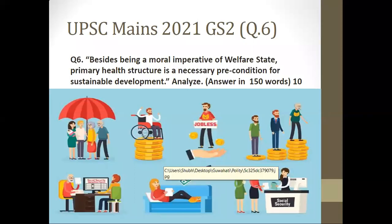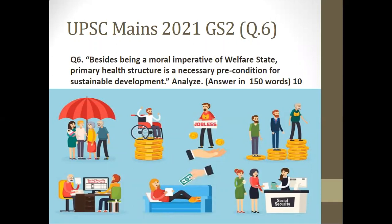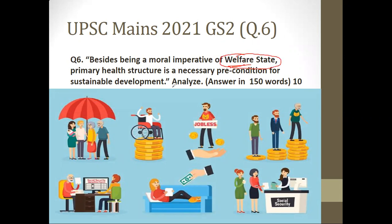Hello everyone. Today we'll be discussing UPSC Mains 2021 GS Paper 2, Question Number 6 — a good question with so many dimensions. The terms in this particular question have also been asked in Prelims. Before we talk about the question itself, let's discuss some important keywords like 'welfare state' and 'primary health structure.'